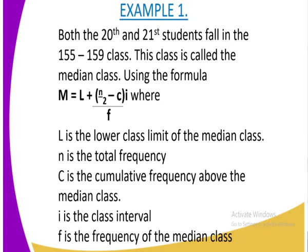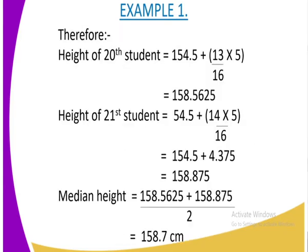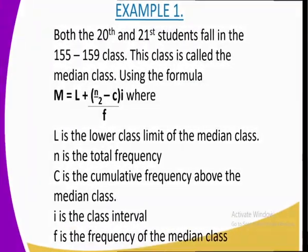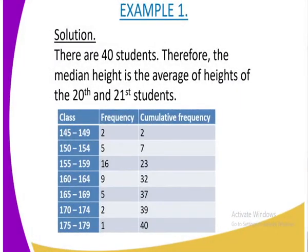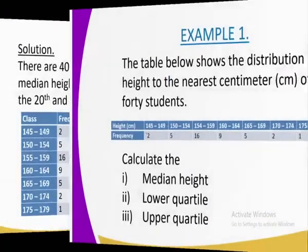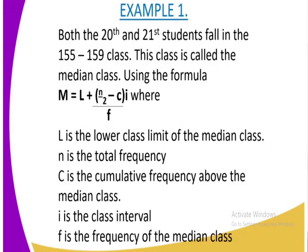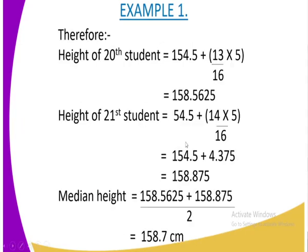Having those definitions, we are going now to calculate our median. Our height of the 20th students, we are going to have 154.5. Remember our 154.5 is the highest class frequency of the median class. Then we add, we are going to add 13, you get 13 over 16.